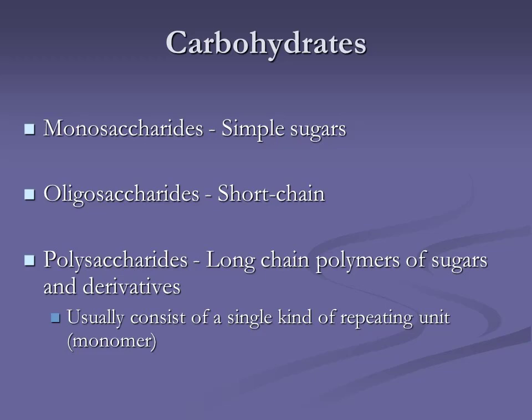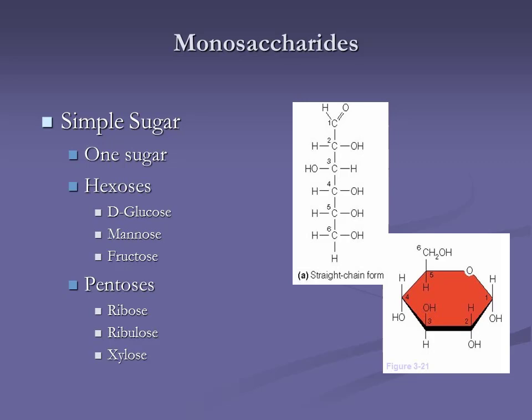Looking at our simple sugars — monosaccharides — we're going to see hexose sugars: glucose, mannose, and fructose. Hexose means six, so in glucose there are six carbons. Those six carbons are going to be important when we get to the Krebs cycle. Penta means five — five-carbon sugars: ribose, ribulose, and xylose. Ribose is the foundational sugar of RNA.